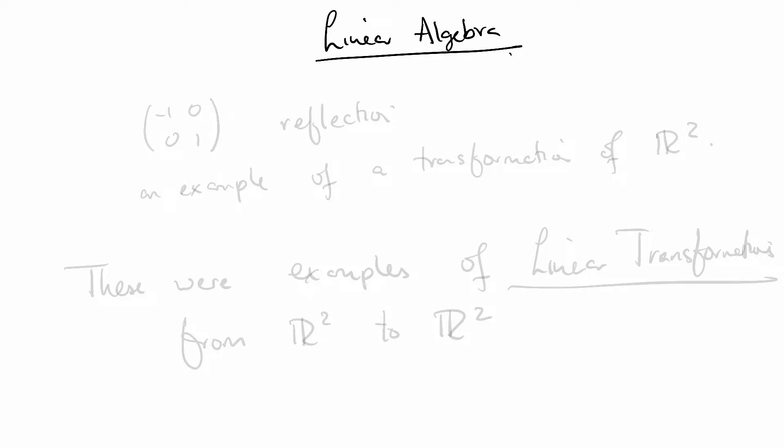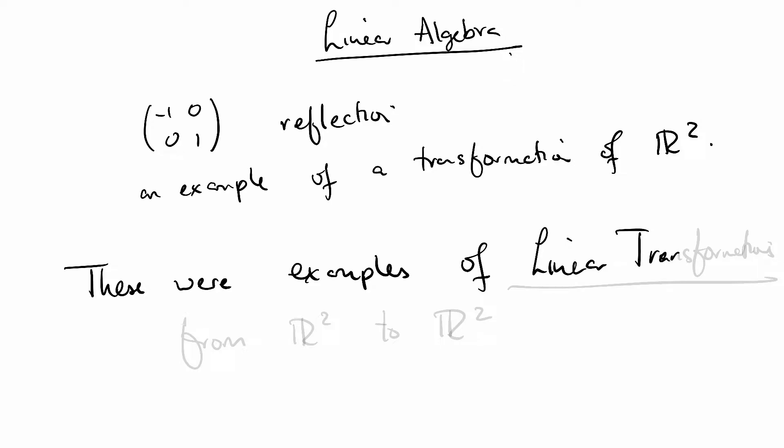In the last lesson we were talking about certain transformations of space given by left multiplication by a matrix. So for example we had negative 1, 0, 0, 1, which was a reflection and was an example of a transformation of R2. These were examples of linear transformations from R2 to R2.